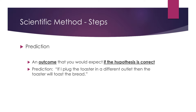Based on your hypothesis you make a prediction of what would happen. Your prediction is an outcome that you would expect if your hypothesis is correct. In this case your prediction is: if I plug the toaster into a different outlet, then the toaster will toast bread. This assumes the toaster was plugged in in the first place. If it's plugged in and everything looks right, you try a different outlet because the toaster runs on electricity. So the prediction is: I plug the toaster into a different outlet and the toaster will toast bread.